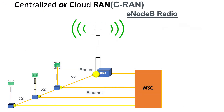So exactly what is CRAN? Well, CRAN is an acronym for Centralized or Cloud Radio Access Networking. It's basically a new implementation of the eNodeB which will hopefully significantly reduce costs and make the system much more efficient.